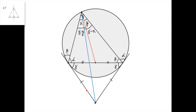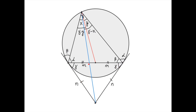This triangle is isosceles, since this angle equals this angle equals gamma, and therefore this length equals this length. Let's call this length m — then this length here is also m, because this point is the midpoint of this side. And let's call this distance n — then this distance is also n.